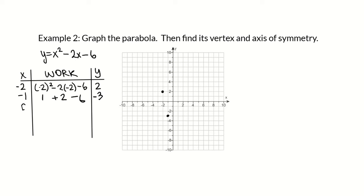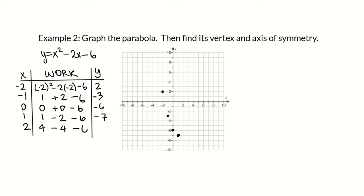Plugging in 0: 0 squared is 0, negative 2 times 0 is 0, minus 6, so the point is (0, negative 6). Plugging in 1: 1 squared is 1 minus 2 times 1 is negative 2, minus 6 — that's 1 minus 2 minus 6, which is negative 7, so (1, negative 7) is on the graph. Plugging in 2: 2 squared is 4, minus 2 times 2 is negative 4, minus 6 gives 4 minus 4 minus 6, which is negative 6, so the point (2, negative 6) is on the graph.